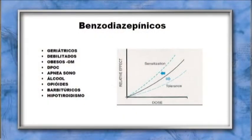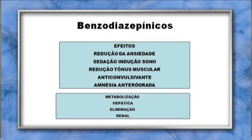Os benzodiazepínicos são drogas extremamente seguras; usados de forma indiscriminada, podem induzir tolerância — o paciente necessita de dose cada vez maior para obter o mesmo efeito — ou sensibilização. Pacientes geriátricos, debilitados, obesos, com DPOC, apneia do sono, alcoolizados, em uso de opioides, barbitúricos ou com hipotireoidismo podem necessitar de doses menores. Seus efeitos incluem: redução da ansiedade, sedação, sono, diminuição do tônus muscular, amnésia anterógrada, efeito anticonvulsivante, metabolização hepática. Alguns metabólitos do diazepam são ativos e sofrem eliminação renal.